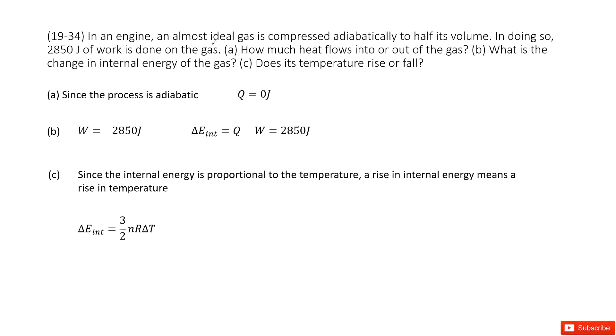In this part we can see we have ideal gas. It is compressed adiabatically to half of its volume, and in this case we find the work 2850 joules is done on the gas. The first part asks you how much heat flows into or out of the gas.